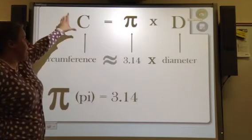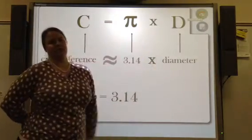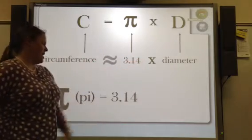So if you define the circumference, you multiply 3.14 times the diameter of the circle. So circumference is about 3.14 times the diameter.